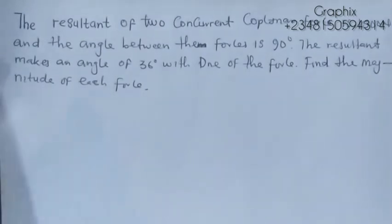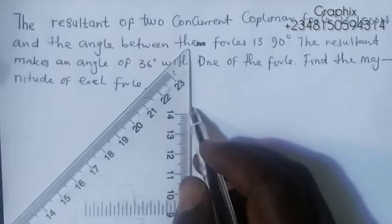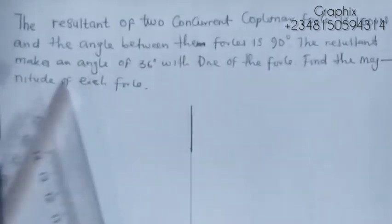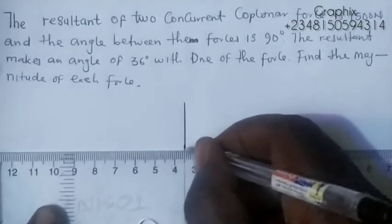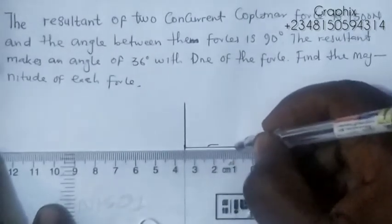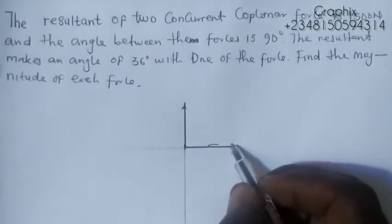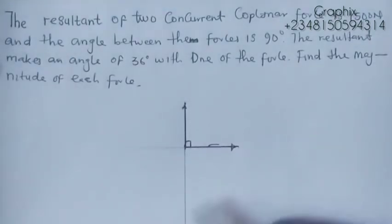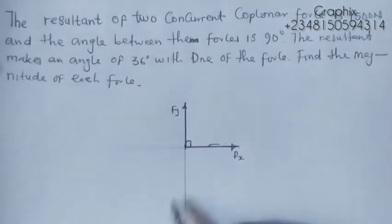Let me illustrate: I have my x-axis and y-axis, and two forces forming 90 degrees with each other — one going up and one going horizontally. This gives us Fx along the x-axis and Fy along the y-axis.